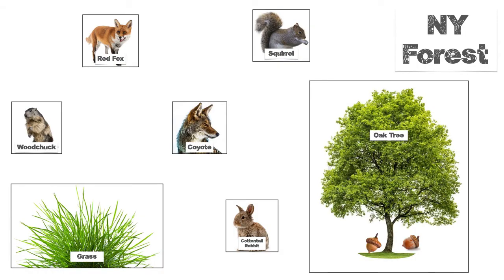So what would that look like in an actual forest diagram? Let's take a look at this oak tree. I do know that oak trees produce acorns, and I know squirrels like to eat those acorns, so I'll draw a line there. The squirrel can be eaten by a coyote. So that is a simple food chain that happens in New York State. You might also say, what about the red fox — doesn't that eat a squirrel? Well, yes, it does. So I can draw an arrow to that.